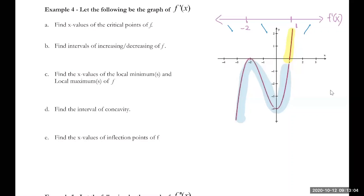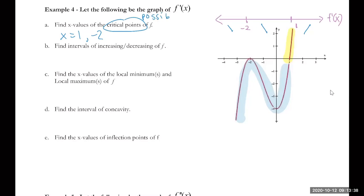When it says find x-values of critical points, there's a critical point at one where f' goes from negative to positive — the original function decreases then increases. The first derivative is negative, then changes to positive, then equals zero. So the critical point occurs at x equals one, and also at x equals negative two. Remember, critical points are just possible maxes or mins, not guaranteed.